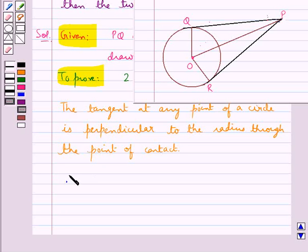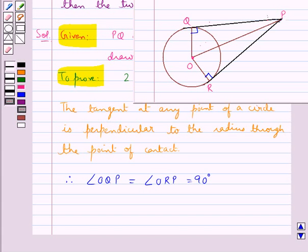this would mean that angle OQP is equal to angle ORP and each is equal to 90 degrees. So this means triangles OQP and ORP are right triangles. Now consider